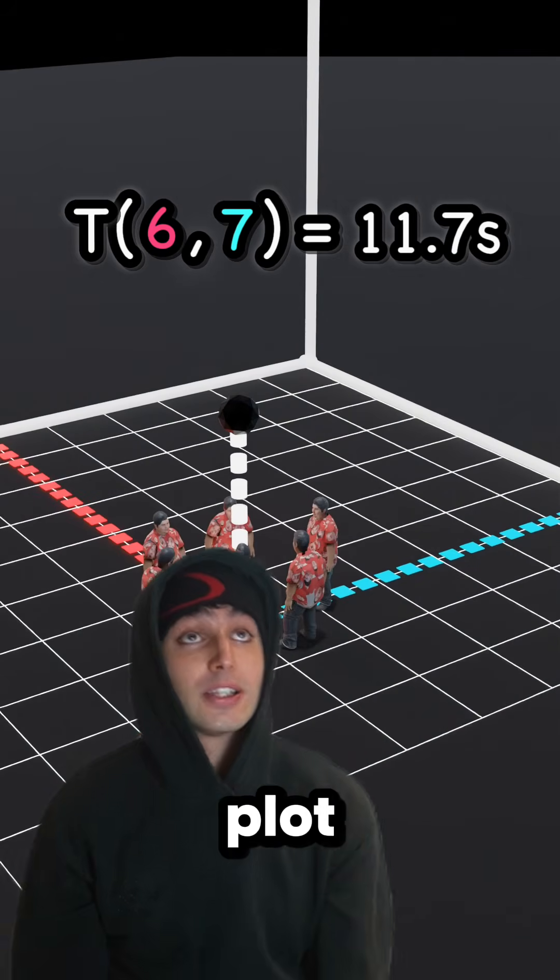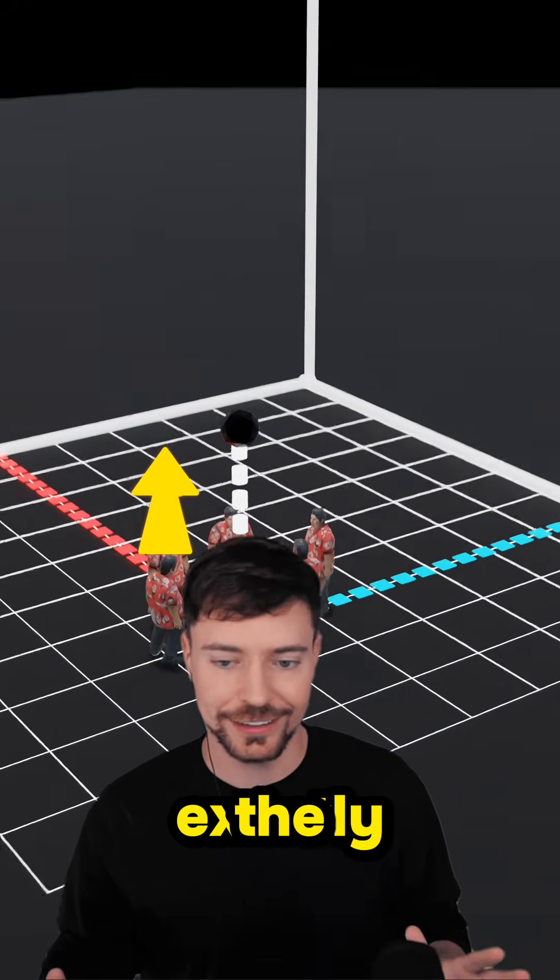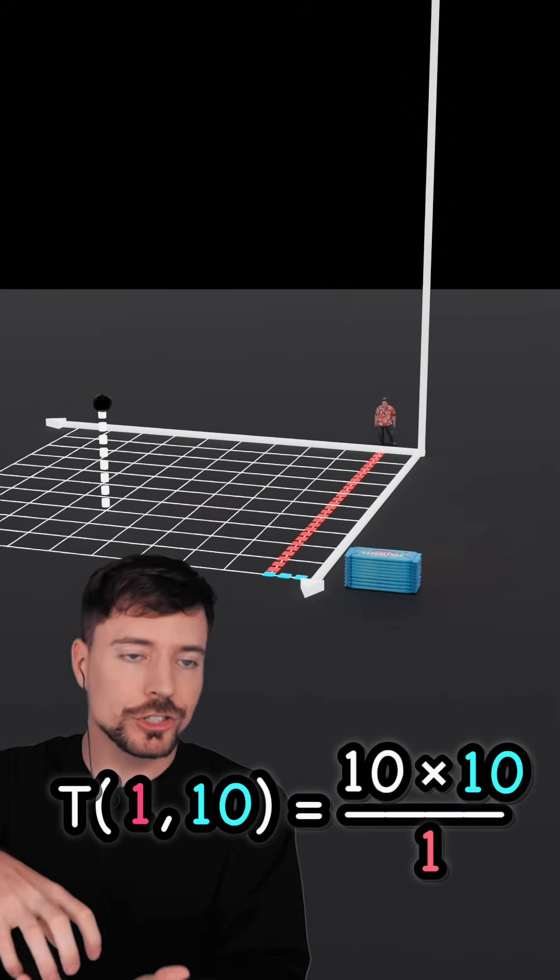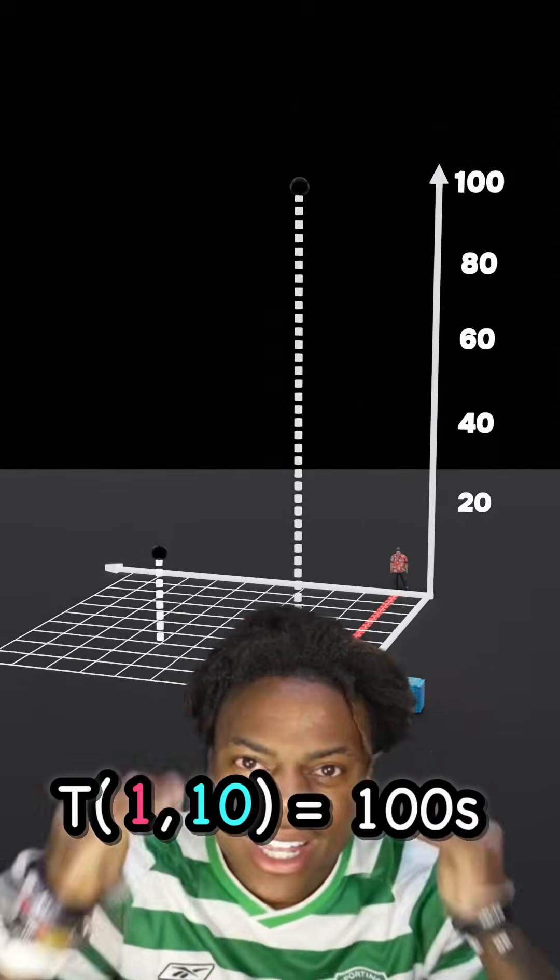Exactly. The output goes on the z-axis. For example, one man versus 10 Feastables, according to the function, should take 100 seconds. Yo, plot a few more, Mr. Beast's.